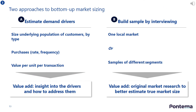When bottom-up market sizing, there are two approaches you can take. The first approach estimates the demand drivers. Here you need to size the underlying population of customers, then multiply by the purchase rate and value of each transaction to size the overall market. The second approach uses market interviews to provide quantitative input to market sizing. Let's look at an example of each approach.